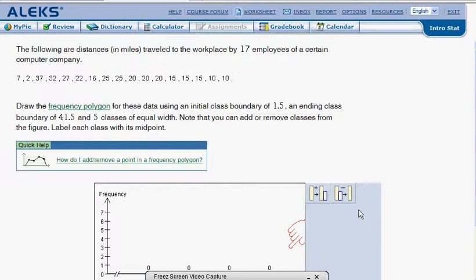Frequency polygons are very much like histograms with one important little twist. In the polygons, we're going to set up our class as much as we did before, but we have to label each class with its midpoint. And so we're going to have to find these midpoints and talk about them a little bit.